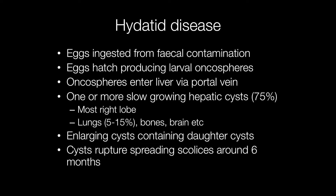Transmission of Hydatid disease starts with the definitive host — for example a dog — eating contaminated meat or offal, such as a liver containing a Hydatid cyst from an infected sheep. The swallowed cysts burst and the tapeworm heads travel to the gut and attach to the intestinal mucosa. The tapeworms are mature after about six weeks, and each mature worm sheds the last segment of its body approximately every two weeks. It is the last segment that contains immature eggs, which are then passed in the faeces.